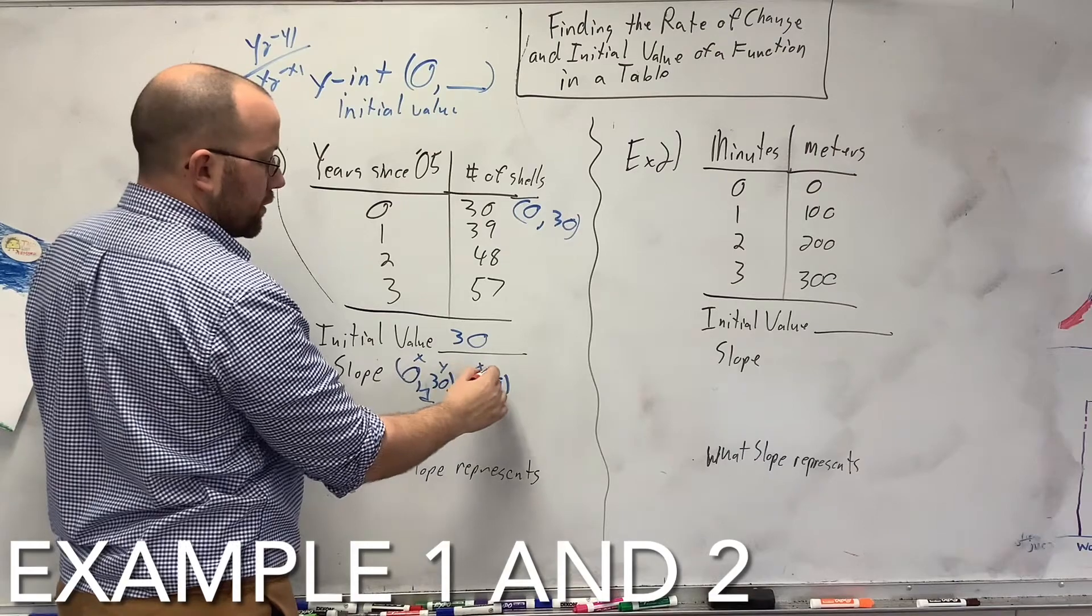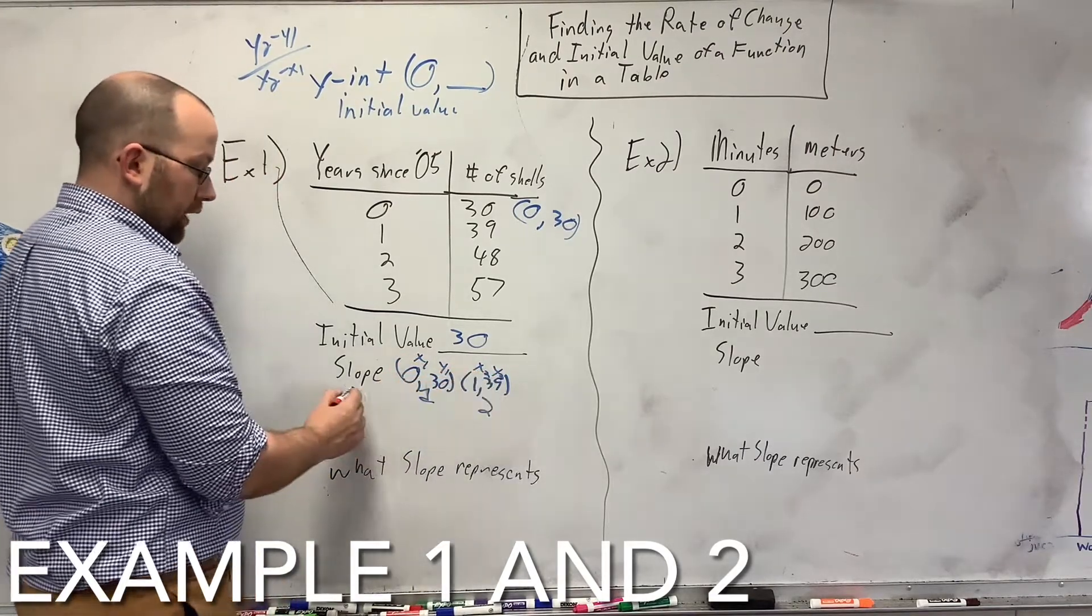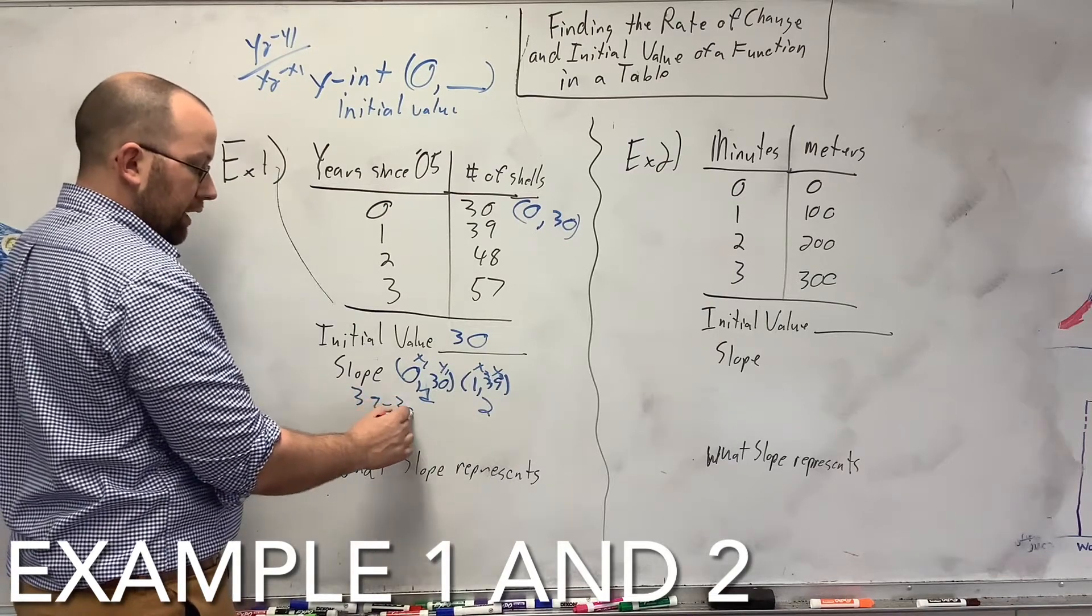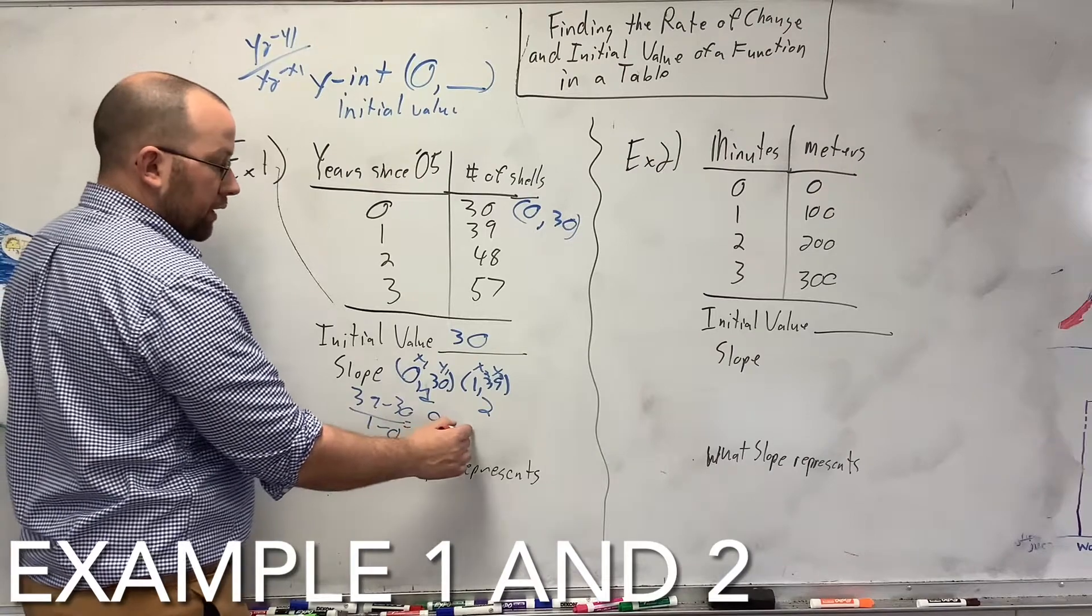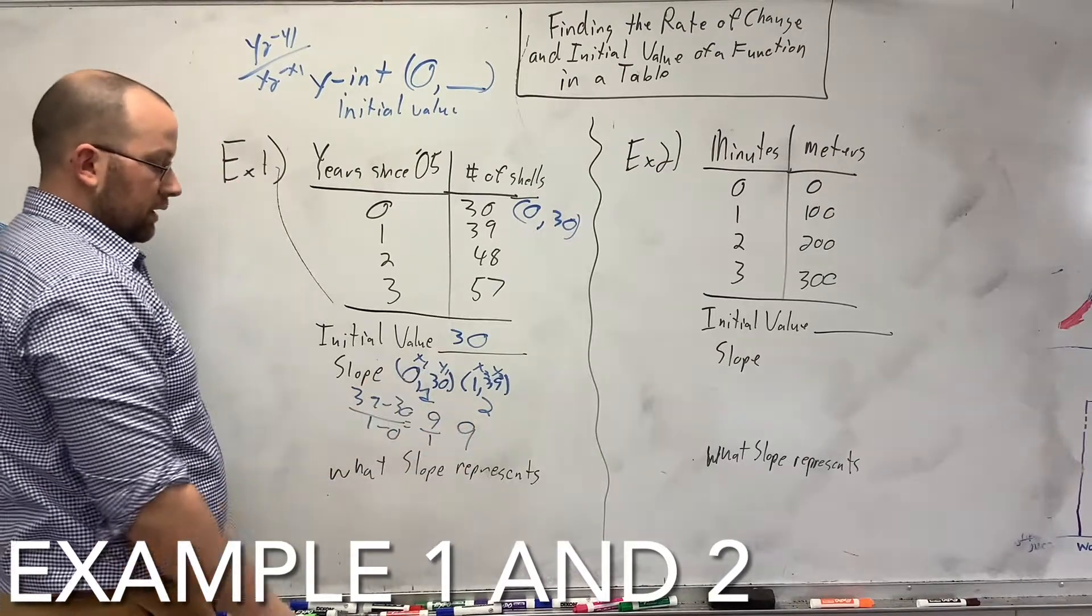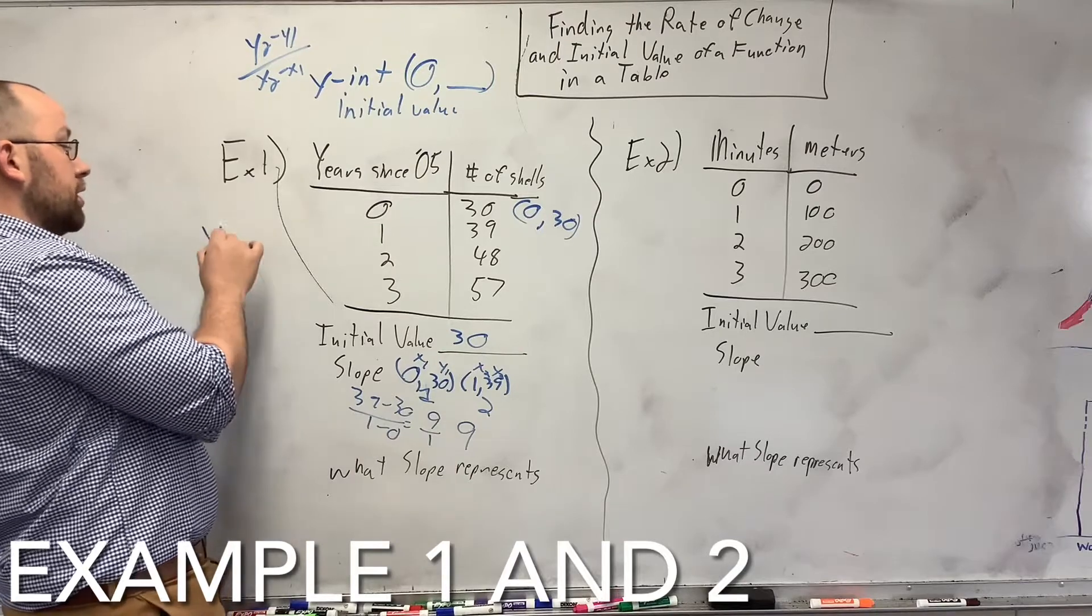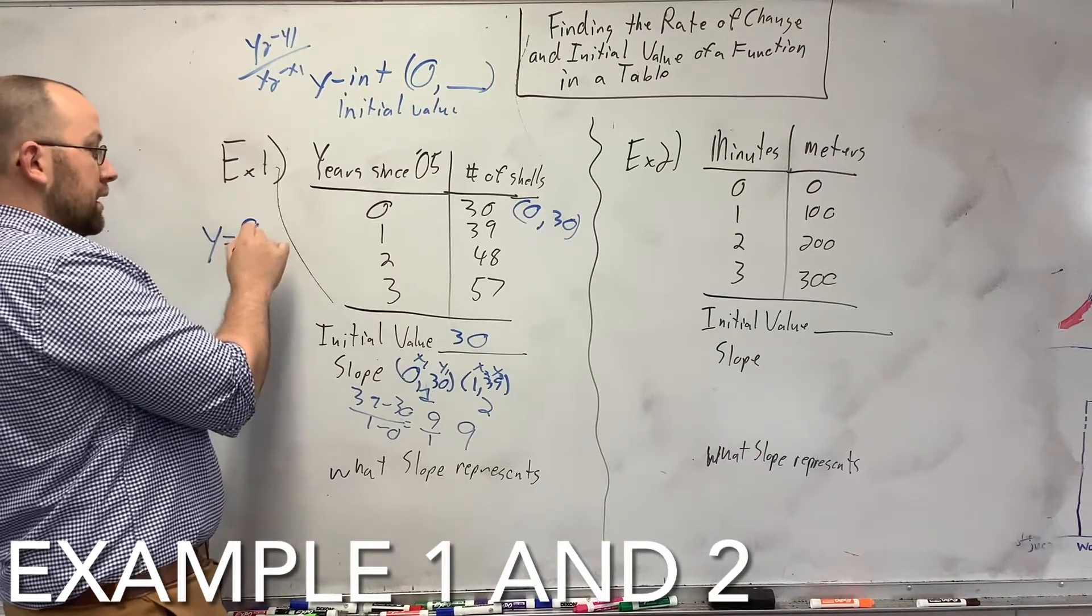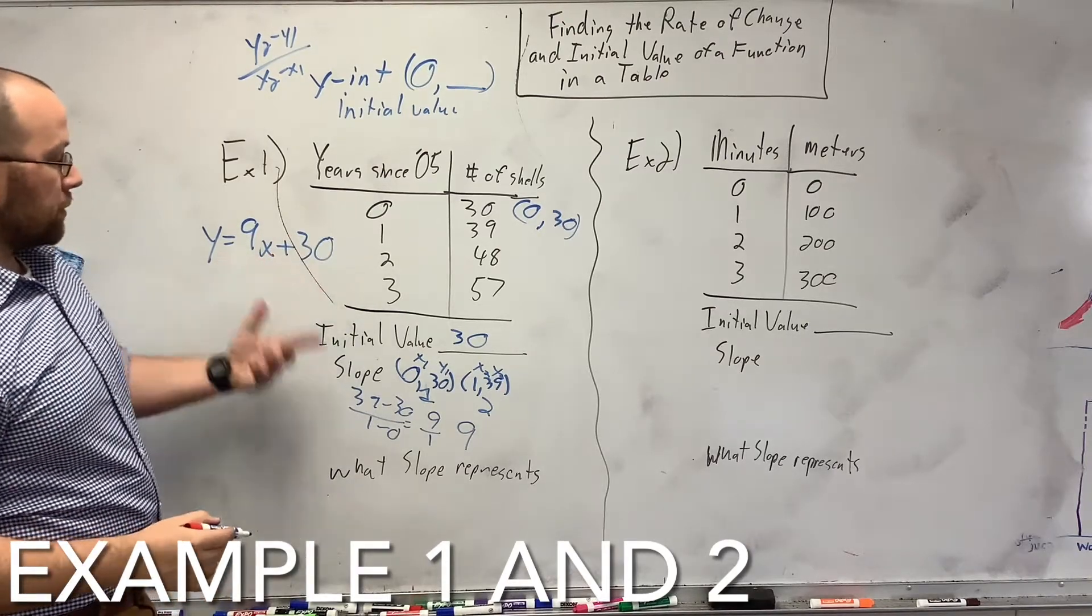So, I get 39 minus 30 over 1 minus 0, which gives me 9 over 1, which is 9. So, 9 is my slope. If I want to write this as a function, it would be y equals 9x plus 30.